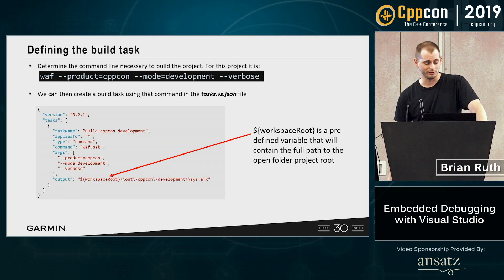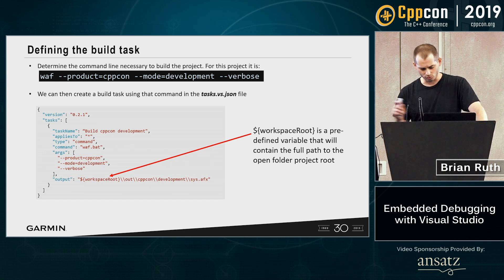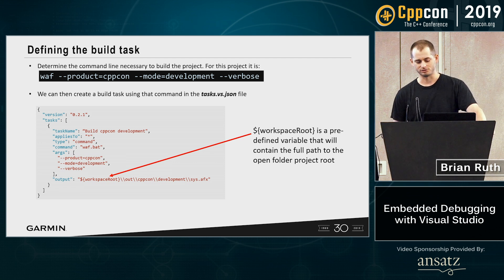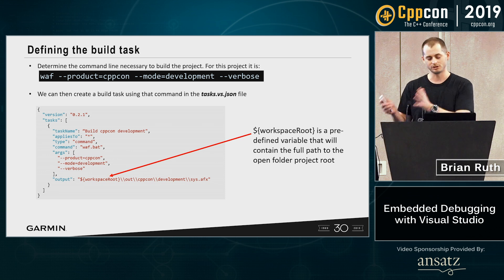In this example, we're going to use a build tool called WAF — it's a Python-based build tool. We're building a CppCon project in development mode. We're going to edit the tasks.vs.json file, call it "build CppCon development". It's going to apply to every file in the folder, run as a command, and we're going to tell it what output to expect. Workspace root is a special variable that points to the root of your folder.